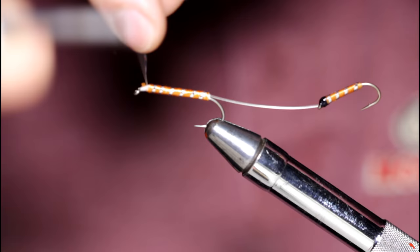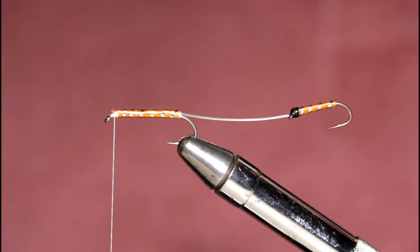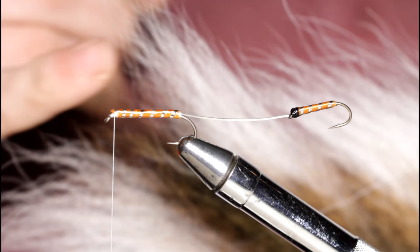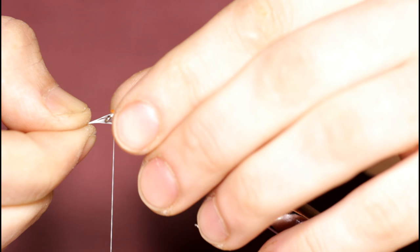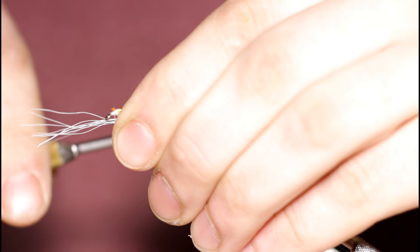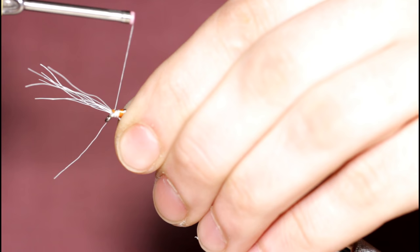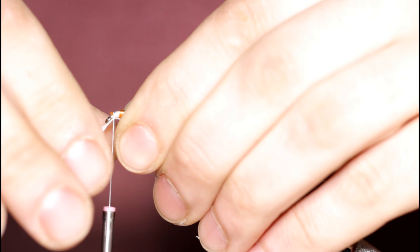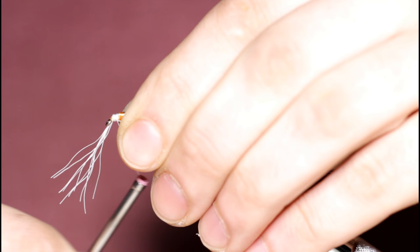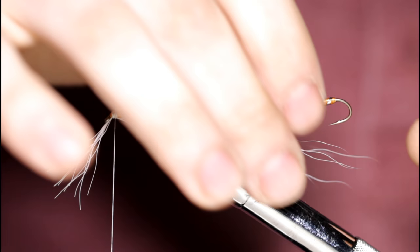So the next material is some bucktail. I've got some natural bucktail. Grab some white fibers off of this. Separate them into a sparse clump. And I'm going to set this under the hook and wind down towards the hook eye. Trying not to apply too much pressure here. And that flared out a little bit but not too bad. Should straighten out. So I'm just going to snip this off.